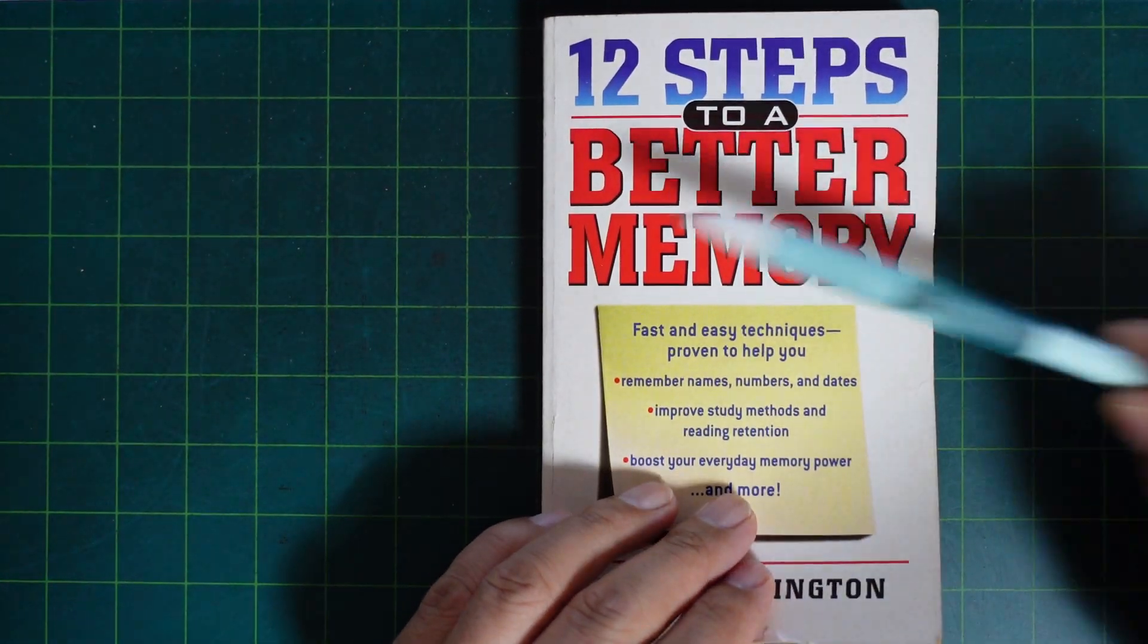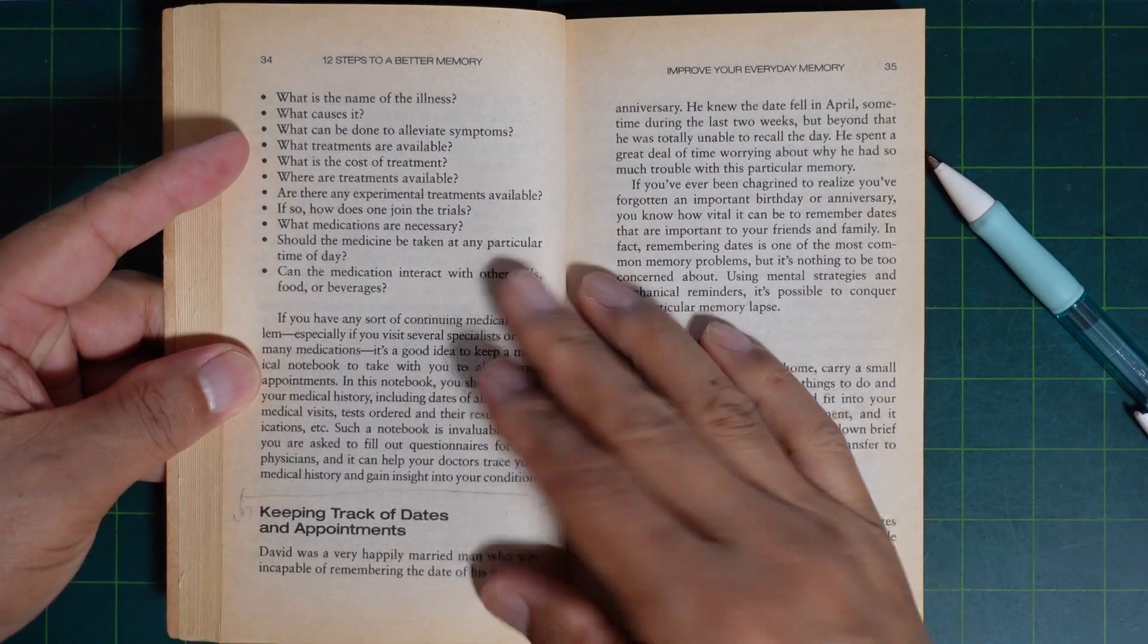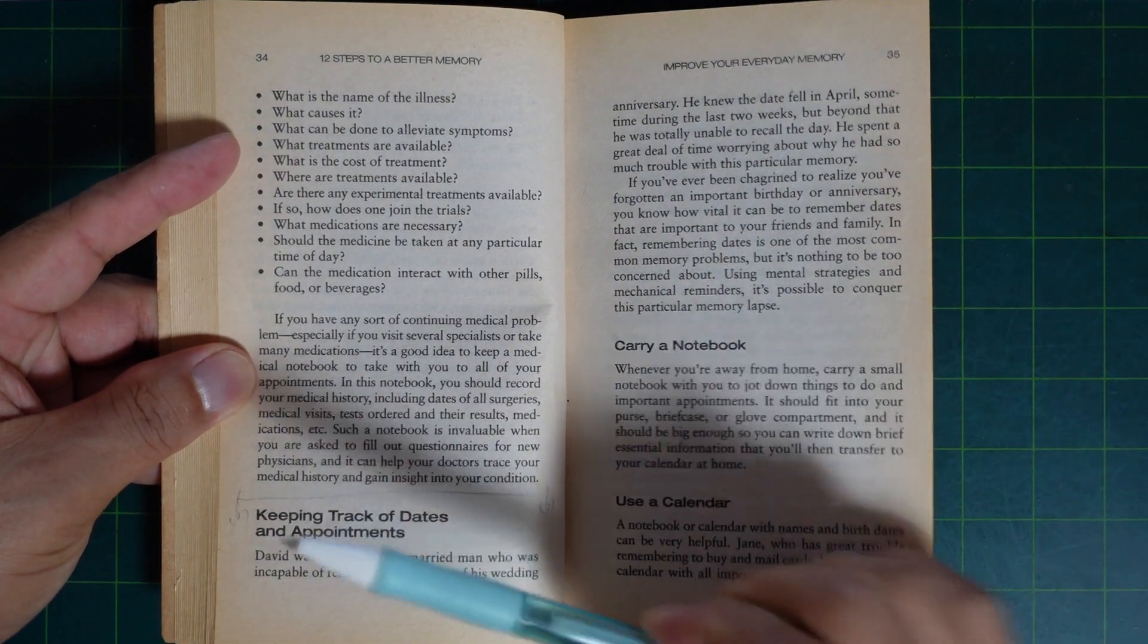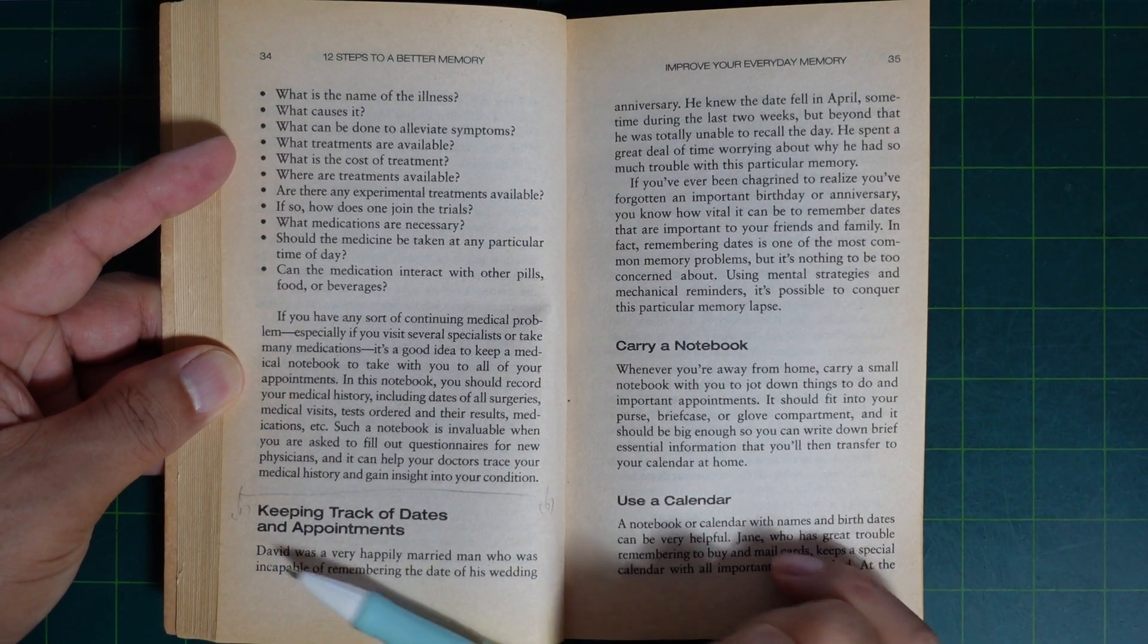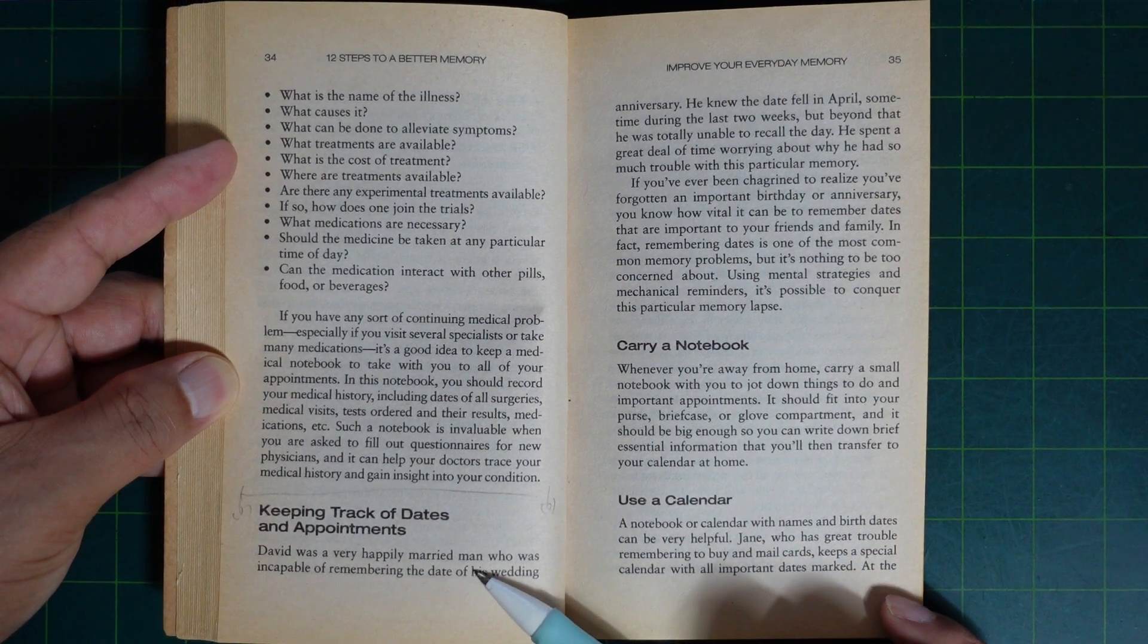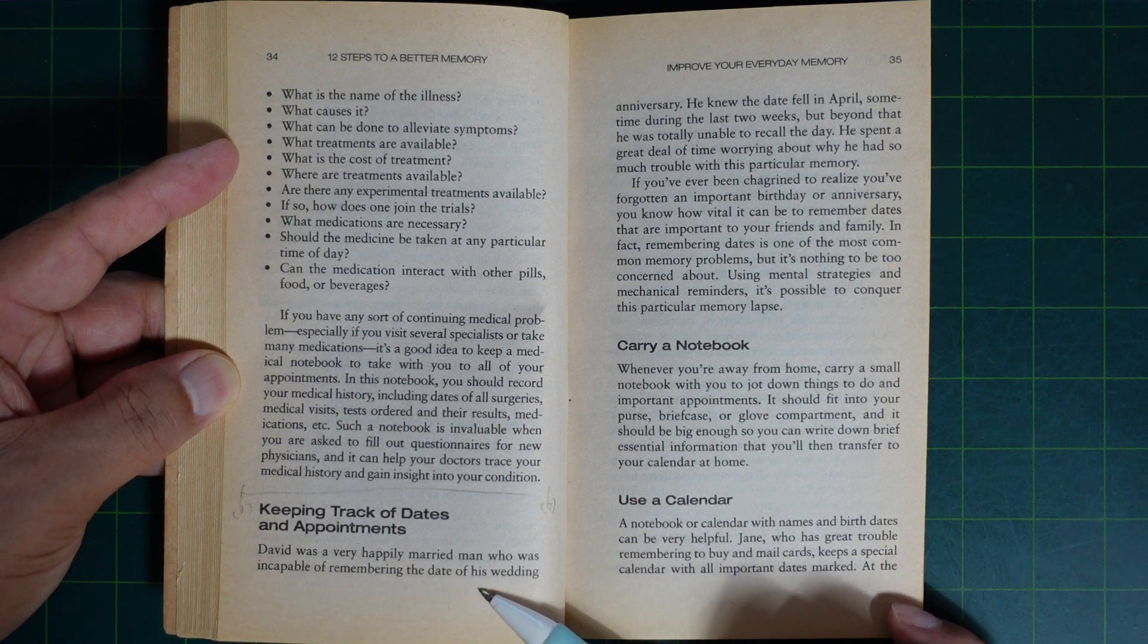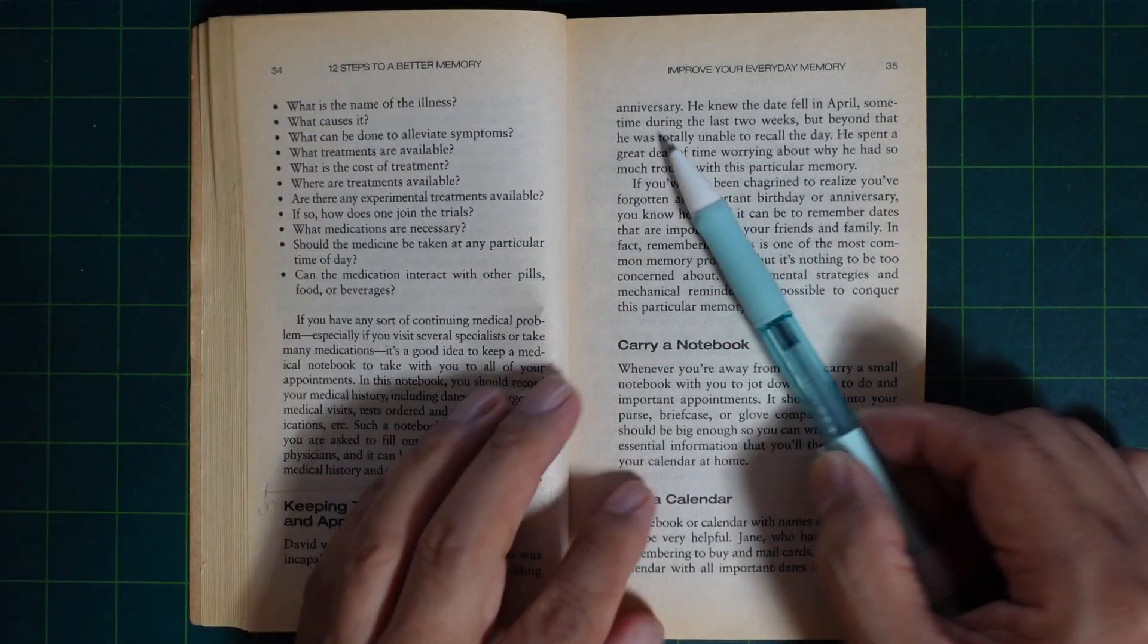12 Steps to a Better Memory. Keeping track of dates and appointments. David was a very happily married man who was incapable of remembering the date of his wedding anniversary. He knew the date fell in April.